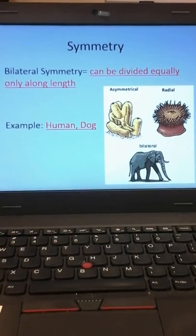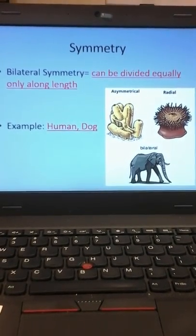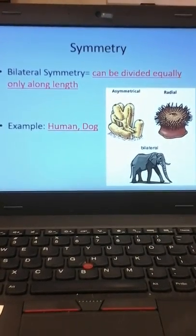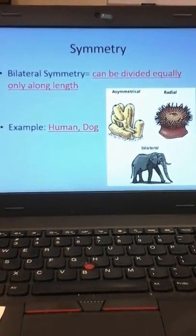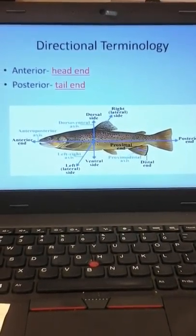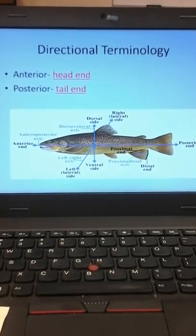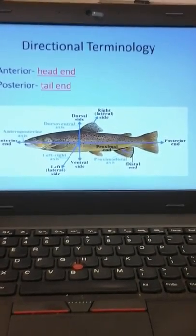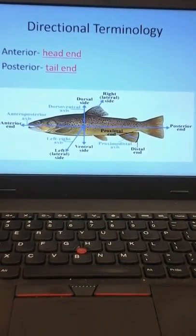When we talk about animals, we can't use the terms front, bottom, top, or back anymore. When you're standing up, your belly is your front and your back is behind you. But if you lay on your back, your stomach is on top. If you lay on your stomach, your back is on top. So there are certain terms you need to know: anterior, posterior, dorsal, and ventral. Anterior means towards the head — whether you're standing or on all fours, the head end is always anterior. That's why we have to be very specific with our terminology.